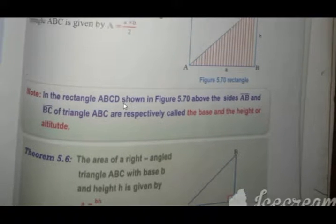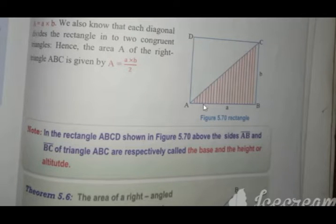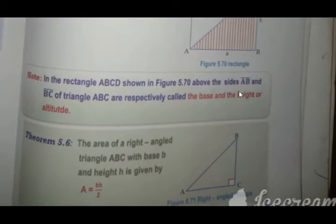So the formula is half base times height. We use altitude, which is the height, and base times height over two.